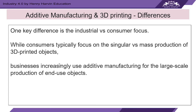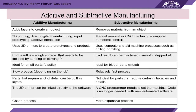The small difference between additive manufacturing and 3D printing depends on industry versus consumer focus. While consumers typically focus on singular production of 3D printed objects, businesses increasingly use additive manufacturing for large-scale production of end-use products. So additive manufacturing is primarily used for large-scale production, while 3D printing is used for smaller, customized consumer needs.